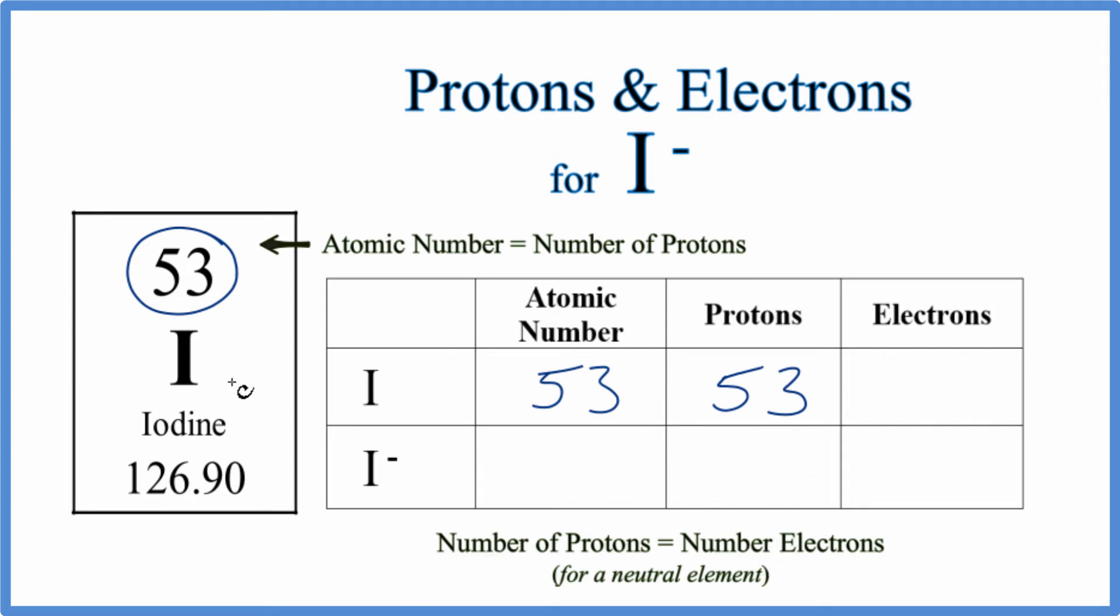So we'll have 53 electrons for neutral iodine. For the I minus, the atomic number—the only thing that's different is electrons.